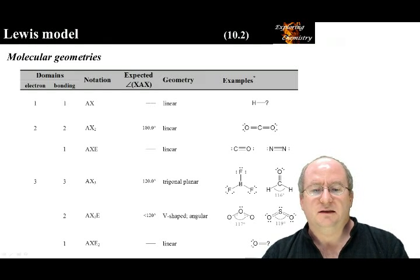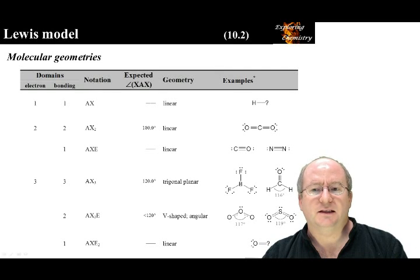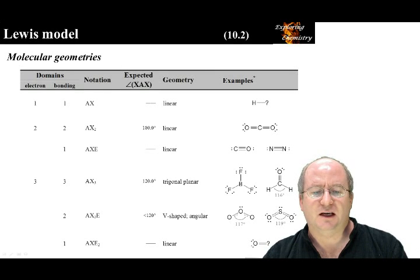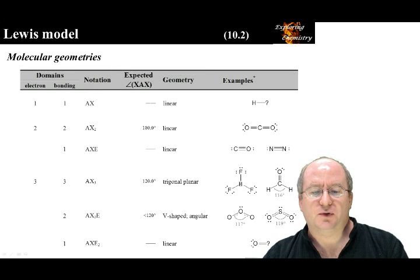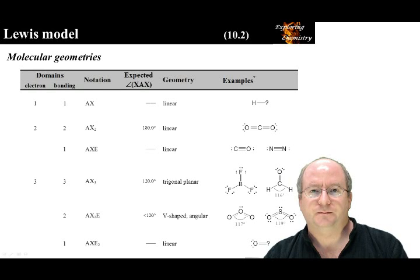With three electron domains, the parent geometry is trigonal planar. In BF3, all bonding domains are the same, so the bond angle is 120 degrees. However, the bond angle in H2CO deviates from 120 degrees because the bonding domains are different — one bonding domain has four electrons and occupies more space. This causes the O-C-H bond angle to be greater than the ideal, and the H-C-H bond angle to be less than the ideal. When one domain is non-bonding, the geometry is called V-shaped or angular. When two domains are non-bonding, the geometry is linear because there are only two nuclei.